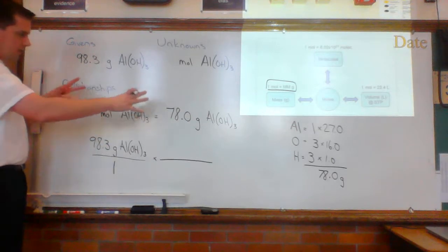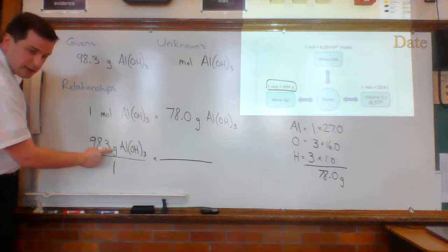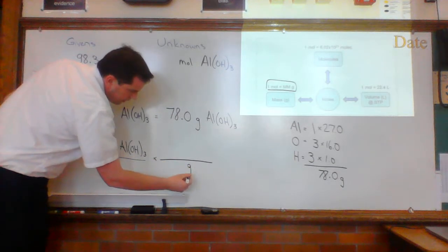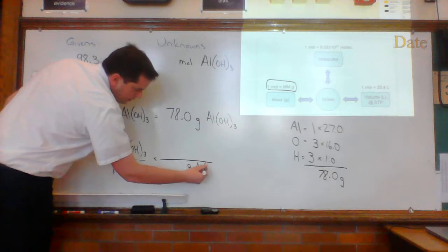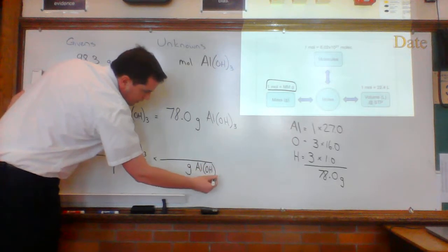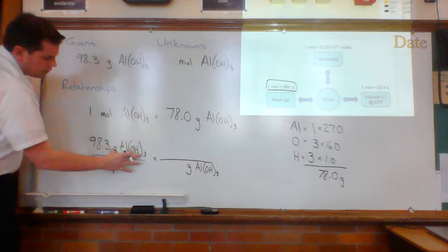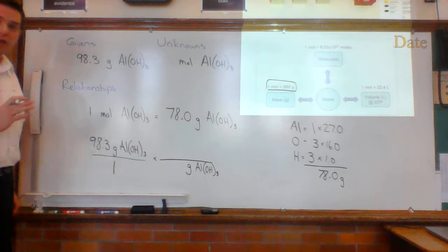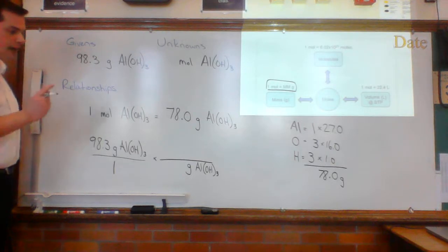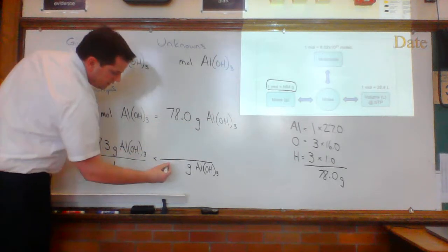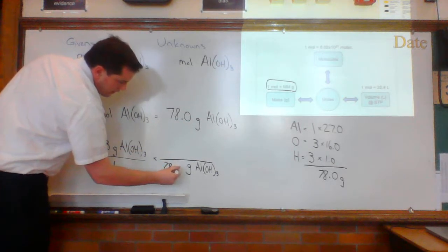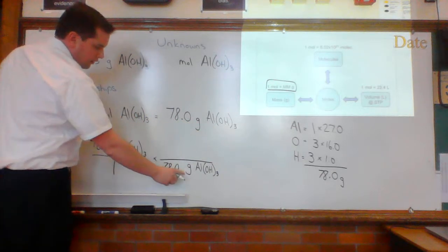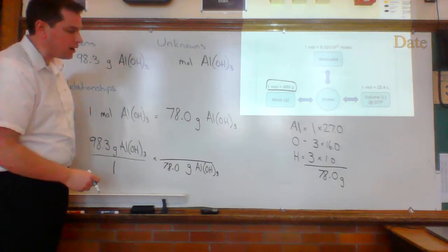Before I try to figure out what goes on top and what goes on the bottom, I can take the grams and the chemical from that numerator and I can move it down to the denominator of the next fraction every single time. Now I know that 78.0 goes on the denominator because it's grams here, grams there. I fill that in first, and now I never get it wrong.